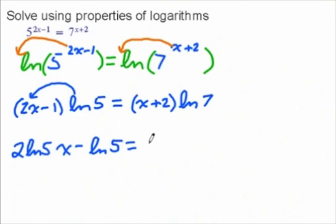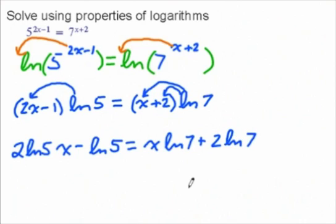I'm going to write it kind of backwards, x times ln of 7. That way I don't get confused and think it's ln of 7x. And then, that would be from this one, and then we're going to get 2 times ln of 7, plus 2 times ln of 7.